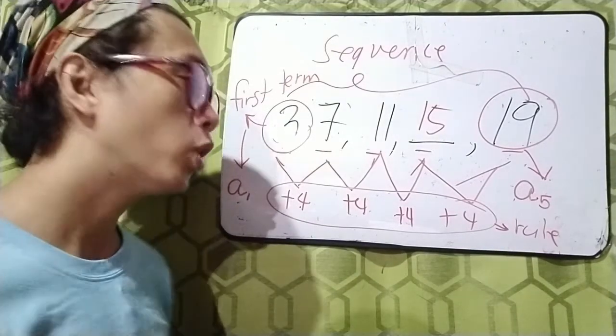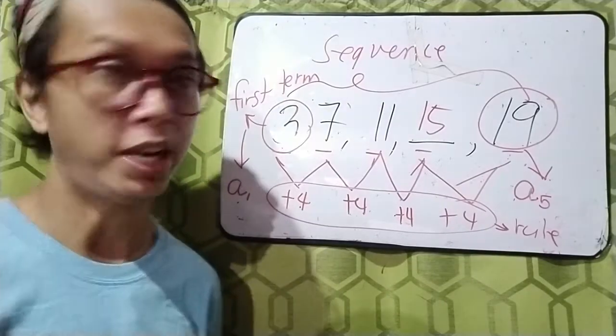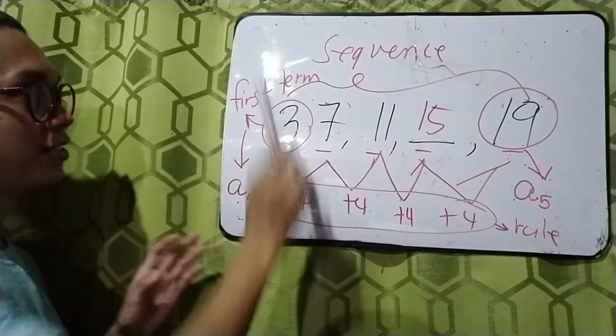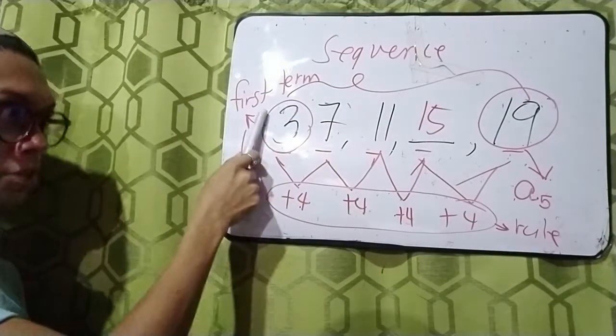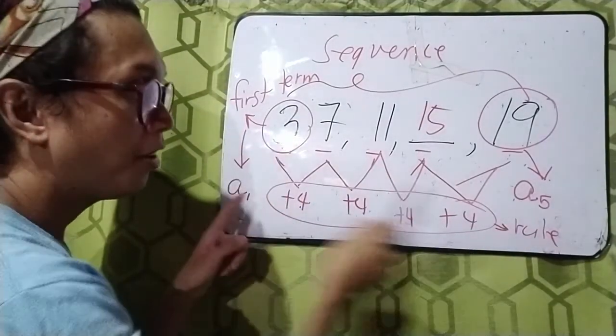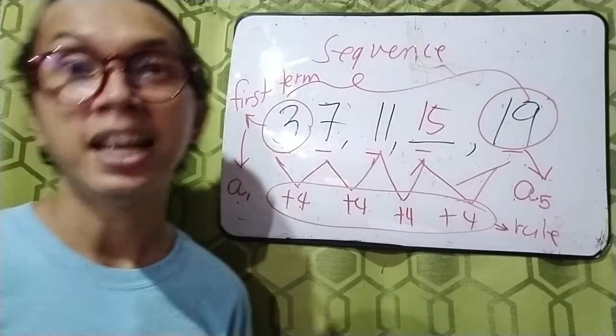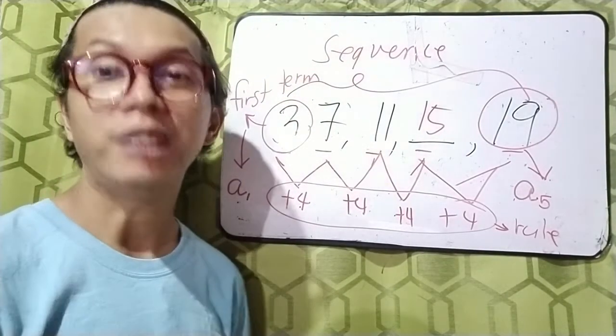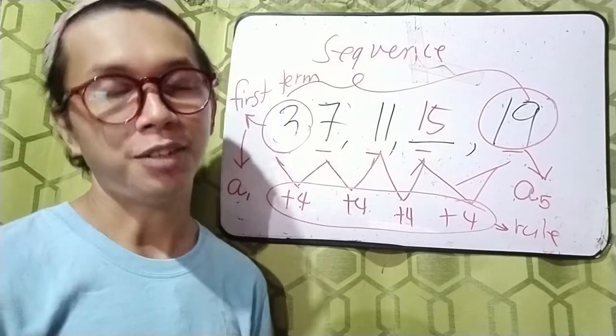Or we can call it the nth term or the formula. So, again, we have here sequence, we have here terms for the numbers, and we have here the rule on how to get the next term of a certain sequence.